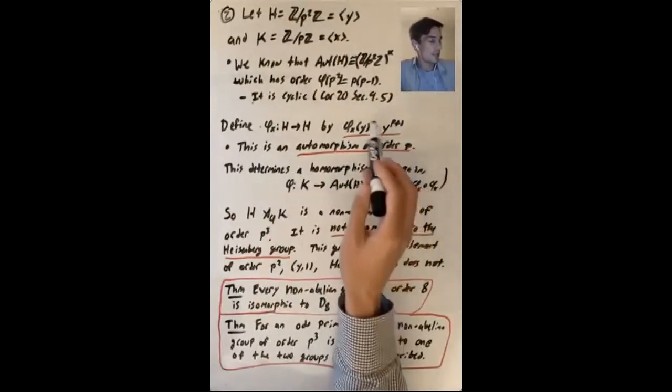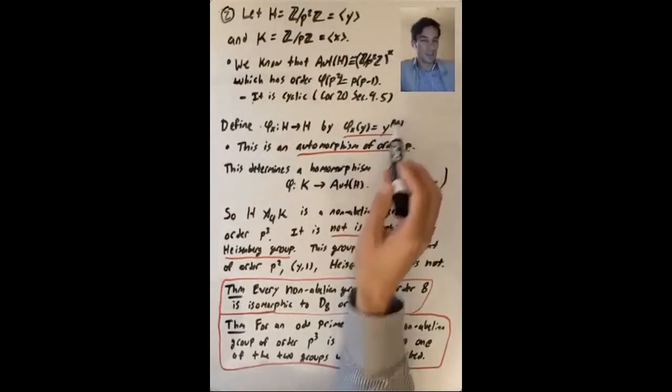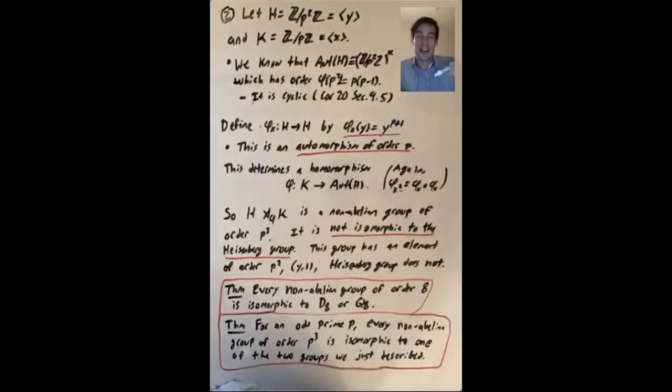So this is an automorphism of order p. You take y to the p plus one, you do it again, you do it again, you do it again, you keep raising to the p plus one power. And if you do this p times, you'll get back to y.